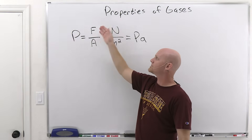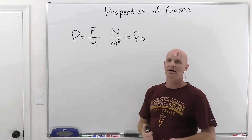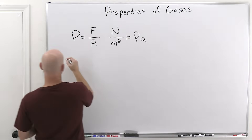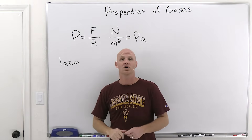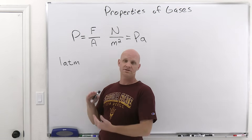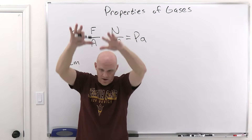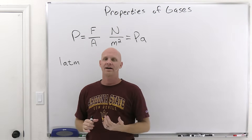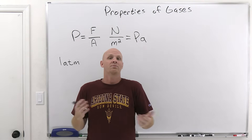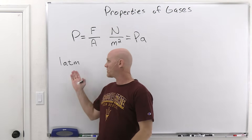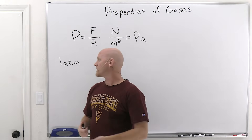Pressure is directly proportional to force but inversely proportional to area. The most common unit we will use is the atmosphere — simply the air pressure at sea level on planet Earth, hence the name. It comes from the weight of all the air above you at sea level. Climb a tall mountain and there's less air above you, so pressure decreases below one atmosphere as you go up in elevation.